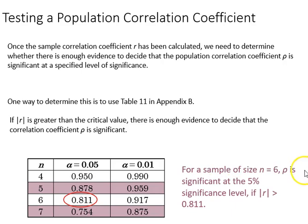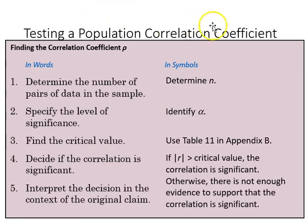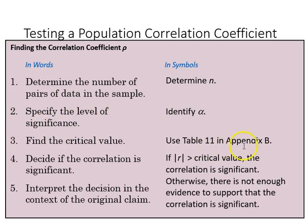For a sample of six, Rho is significant at the 5% significance level. These are the steps involved with testing a population correlation coefficient: first, we determine the number of pairs of data in the sample to give us n; we then specify our alpha level; from that we get our critical value using our table; then we decide if the correlation is significant — if R is greater than the critical value, the correlation is significant; finally, we interpret the decision in the context of the original claim.